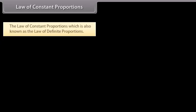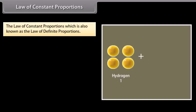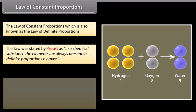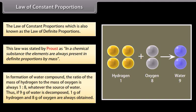Law of constant proportions, also known as the law of definite proportions. This law was stated by Proust. In a chemical substance, the elements are always present in definite proportions by mass. In formation of water compound, the ratio of the mass of hydrogen to the mass of oxygen is always 1 is to 8, whatever the source of water. Thus, if 9 gram of water is decomposed, 1 gram of hydrogen and 8 gram of oxygen are always obtained.